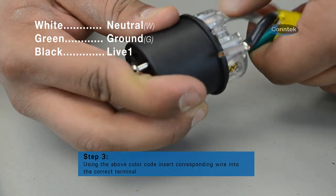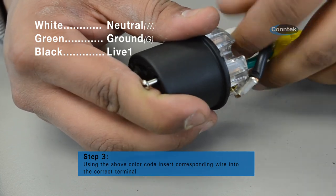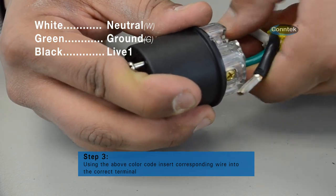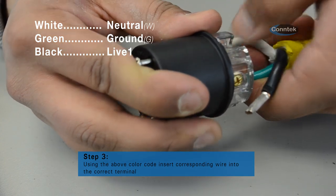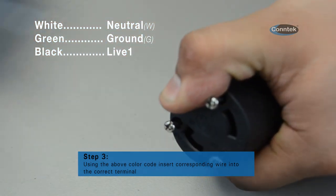When inserting the wire into the terminals, be sure to not have any wire jacket in the terminal as this can affect the continuity of the power cord, or the continuous flow of electricity.